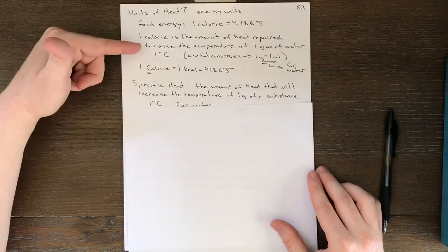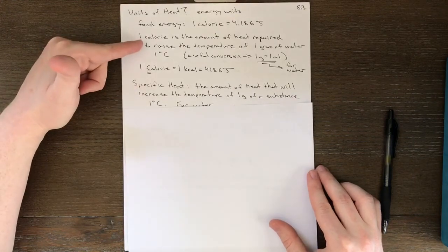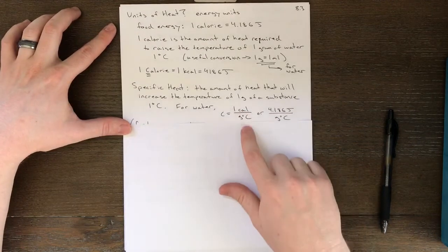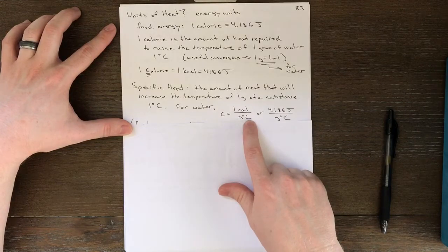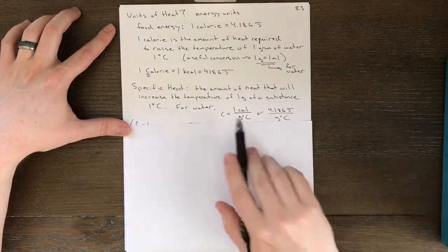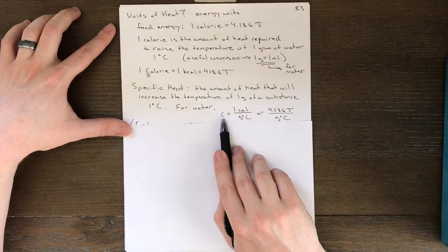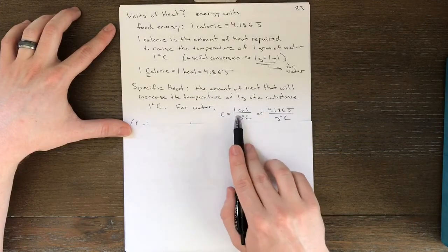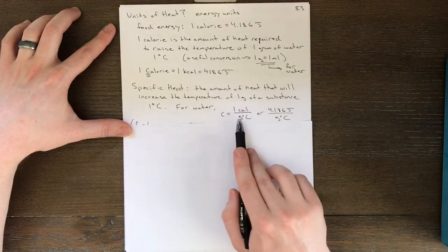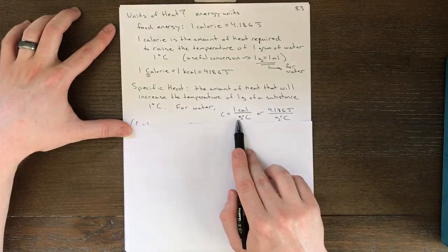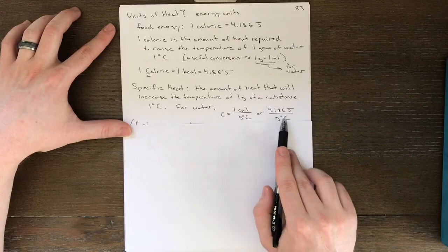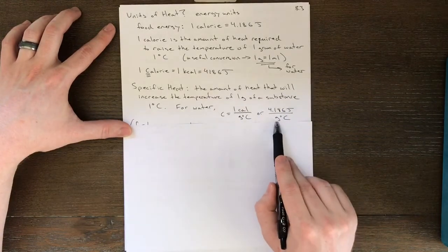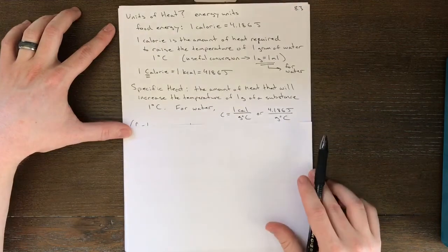Well, that certainly sounded very similar to the definition of calorie, and in fact, the definition of the calorie defines water's specific heat. One calorie will increase one gram of water, one degree Celsius. Specific heat is given by the letter lowercase c, and for water, that lowercase c is one calorie. That's how much heat to raise the temperature of one gram of water, one degree Celsius. Or if you wanted to use joules, 4.186 joules are necessary to raise one gram of water, one degree Celsius.